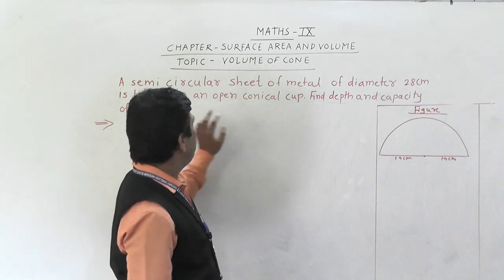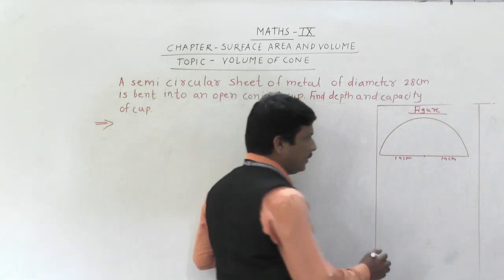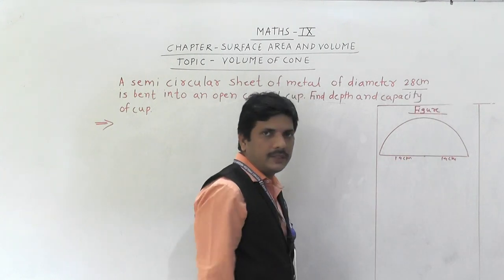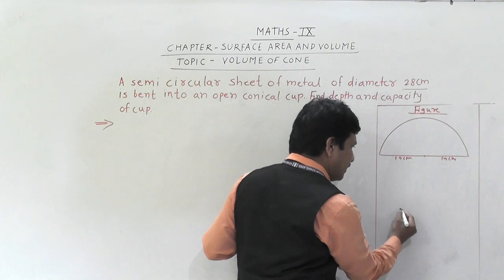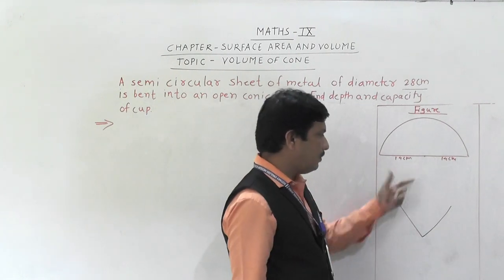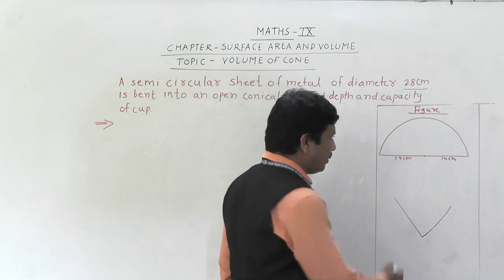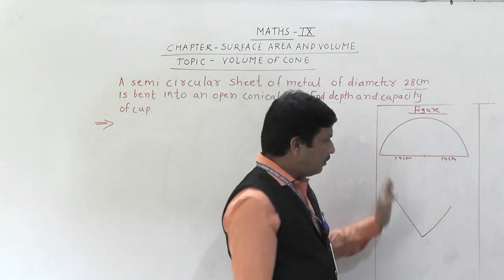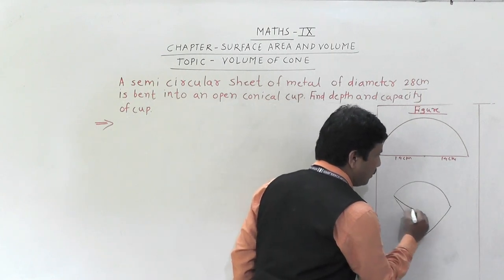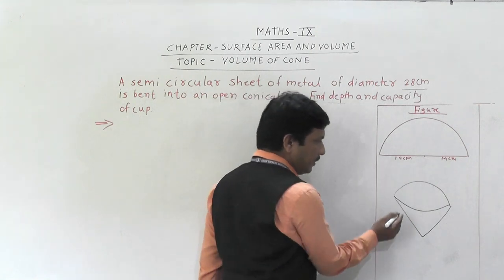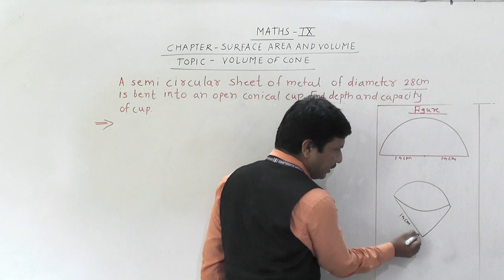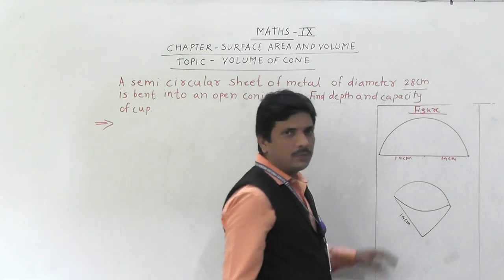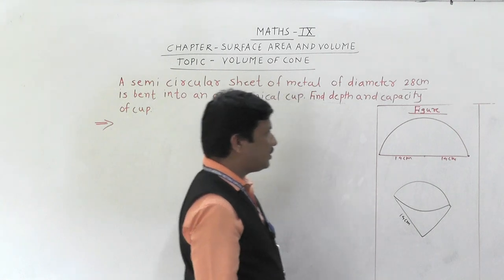When the semi-circular metal sheet is bent into an open conical curve, the radius of the semi-circle becomes the slant height of the cone. The diameter is given as 28 centimeter, so the radius is 14 centimeter. Therefore, the slant height is 14 centimeter. The circumference of the semi-circular sheet will become the base circumference of the cone.